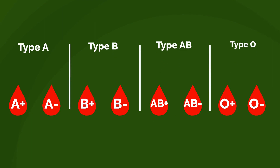There are four main blood groups, which are A, B, AB, and O, and each of these has both a positive and a negative version. For example, blood type A has both A positive and A negative, and B also has both B positive and B negative.